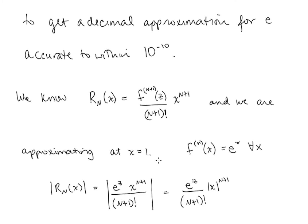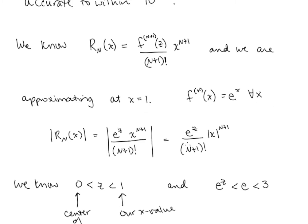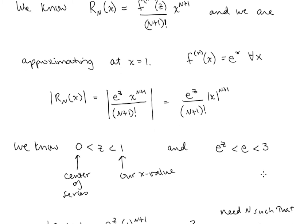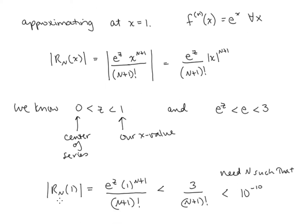We are approximating at x equal 1, and we know that all derivatives of e to the x are e to the x. So the n plus first derivative evaluated at z is going to be e to the z. The remainder term in absolute value can be expressed this way, where z is some number between 0, the center of the series, and 1, the x value at which we are evaluating. With z less than 1, we know that e to the z is less than e, and we know that that's less than 3.